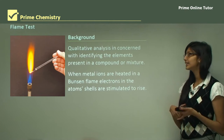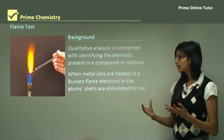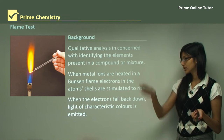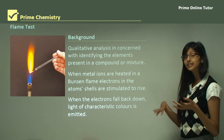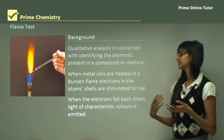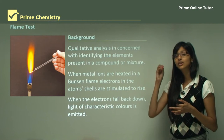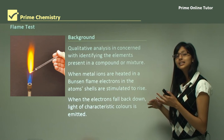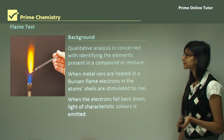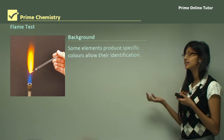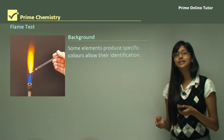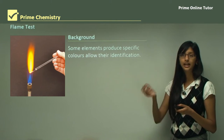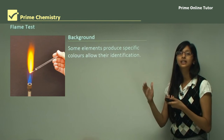When metal ions are heated in a Bunsen burner flame, the electrons gain energy and are stimulated to rise to a higher orbit. When the electrons fall back down, they release that energy as light of a characteristic color. Some elements produce a specific color of light which is a signature color for that element. For example, barium will always produce a pale green color and calcium will always produce a brick red color.